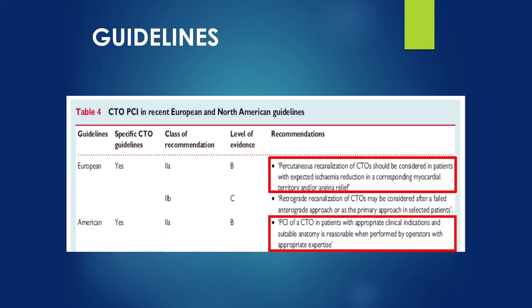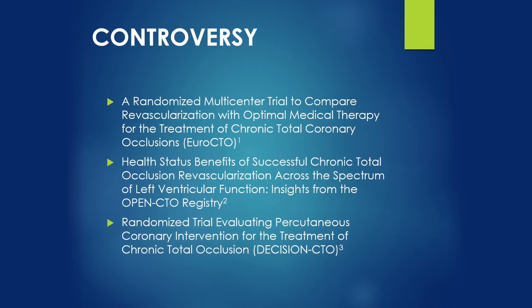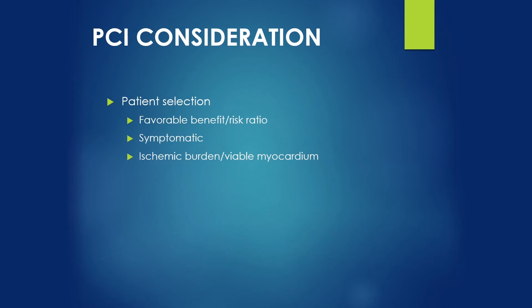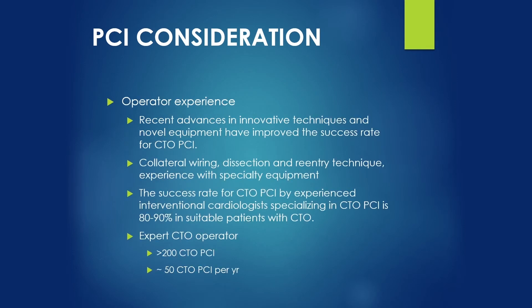Current guidelines recommend CTO PCI for patients who are refractory to medical therapy. This is true for both European and American societies. A number of studies have shown controversy regarding CTO PCI — some studies have favored outcomes associated with CTO PCI while others have not. Key considerations for PCI include patient selection, a favorable benefit-to-risk ratio, the patient needs to be symptomatic, and have significant ischemic burden and viable myocardium.